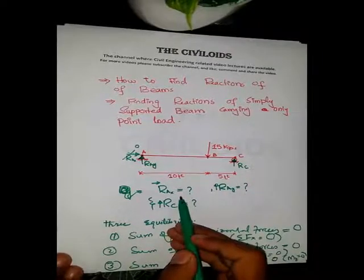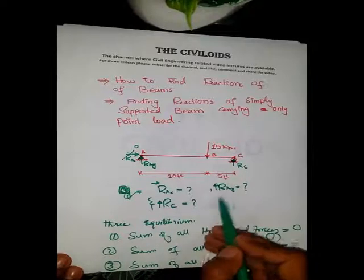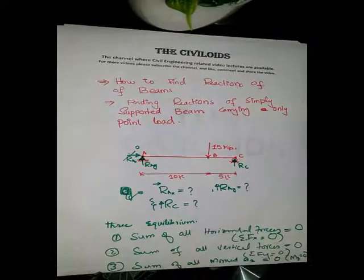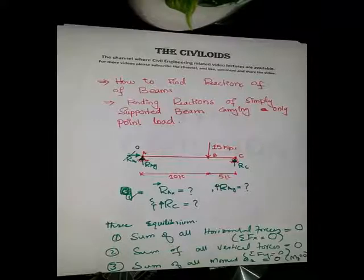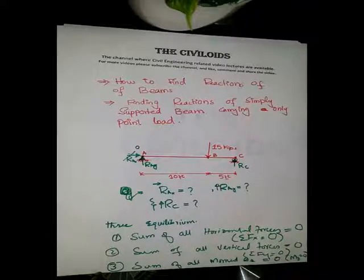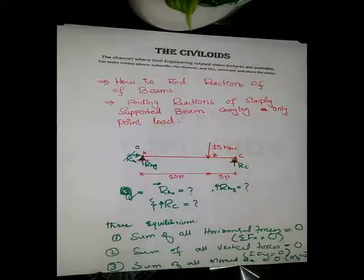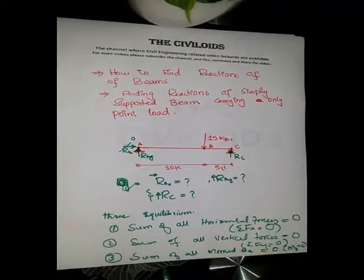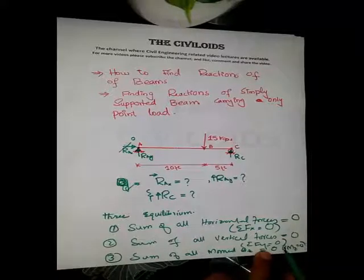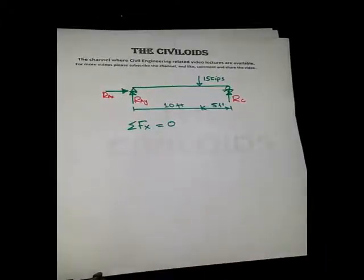The horizontal reaction at A is denoted by RaX, the vertical reaction at A is denoted by RaY, and the vertical reaction at C is denoted by Rc. So we have three unknowns: RaX, RaY, and Rc. To solve this beam we will use three equilibrium equations: ΣFx=0, ΣFy=0, and ΣMz=0.